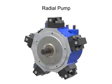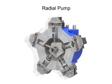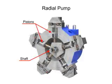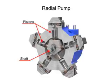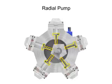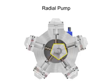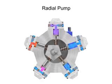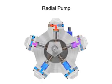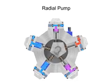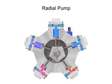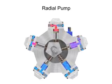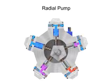Radial pumps are designed so the pistons stroke in a direction at right angles to the shaft. The pistons are arranged like wheel spokes around a cylinder block, with an eccentric central cam mounted on a drive shaft. As the shaft rotates, the cam moves towards the pistons, forcing them down into the cylinder block and discharging the fluid. As the cam moves away, springs help retract the piston and cause the intake stroke. Check valves ensure that fluid only enters the inlet ports and only exits the outlet ports.